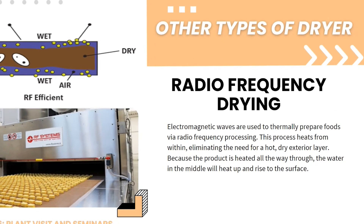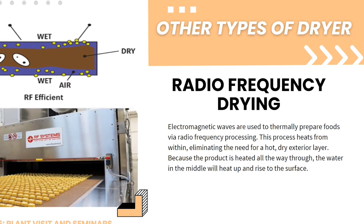The radio frequency dryer uses electromagnetic waves to thermally prepare foods via radio frequency processing. This process heats from within, eliminating the need for a hot, dry exterior layer. Because the product is heated all the way through, the water in the middle heats up and rises to the surface. Radio frequency dried items are generally hot and dry on the interior and cooler and wetter on the exterior due to heat losses at the surface. That concludes the different methods of drying.